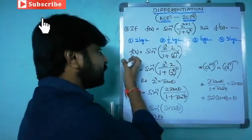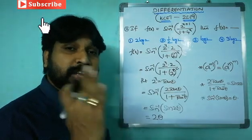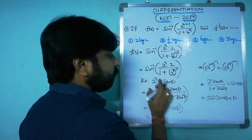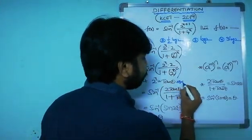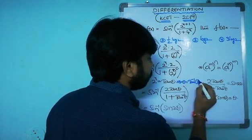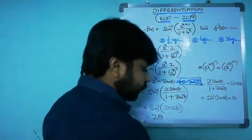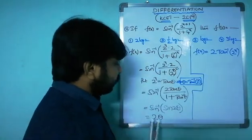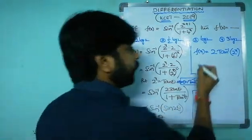Now f(x) is in terms of x, so θ must be written in terms of x. From the substitution 2^x = tan θ, we get θ = tan⁻¹(2^x). Substituting back, f(x) = 2·tan⁻¹(2^x). This is the simplified form of f(x).